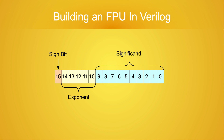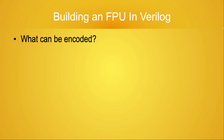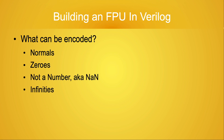All of the formats consist of 3 parts: a sign bit, an exponent field, and a significand field. In addition to encoding normal numbers, the standard includes methods for encoding zeros, quantities which are not a number, infinities, and something called sub-normals. Let's take a look at how the IEEE standard encodes these different types of data using the 16-bit format as an example.